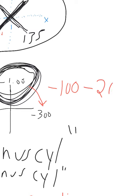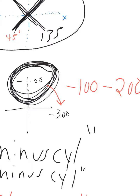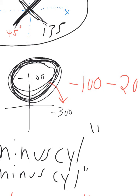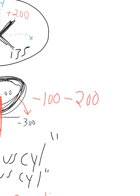The axis will always be at the meridian with the most positive or least minus. So in this case, the axis would be 90 degrees.